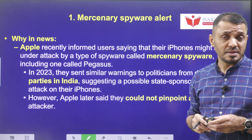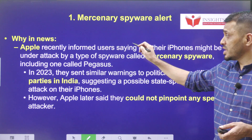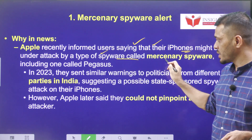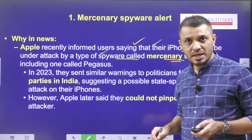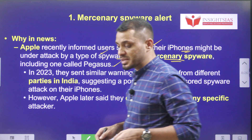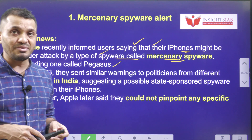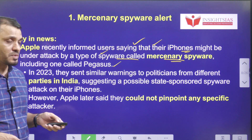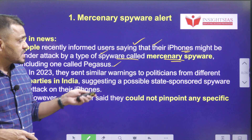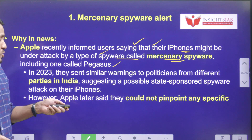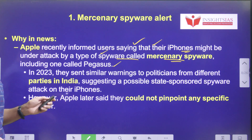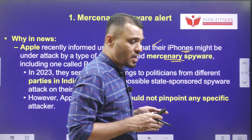The context is: recently, Apple company informed their users that their iPhones might be under attack by a type of spyware known as mercenary spyware, including the one called Pegasus. This kind of warning message was previously given by Apple in 2023 also to certain politicians from different parties in India. At that time, the company suggested there is a possible state-sponsored spyware attack, without naming a specific attacker.